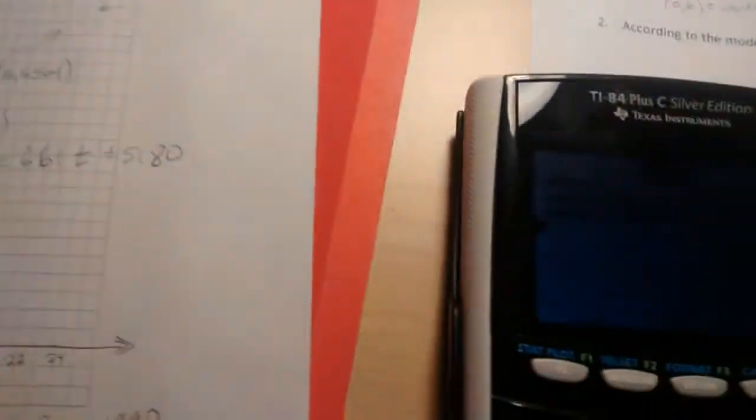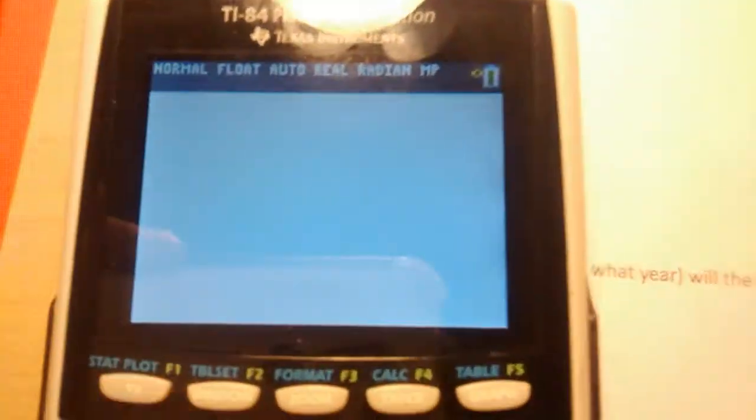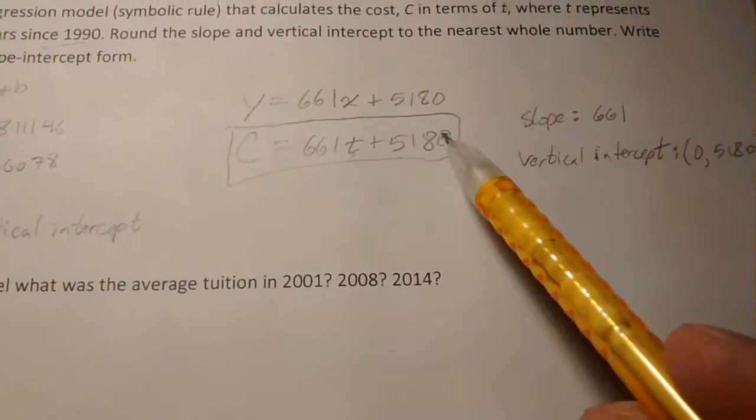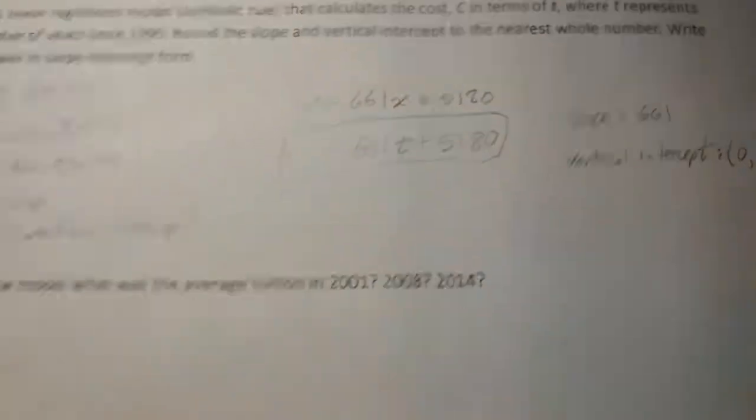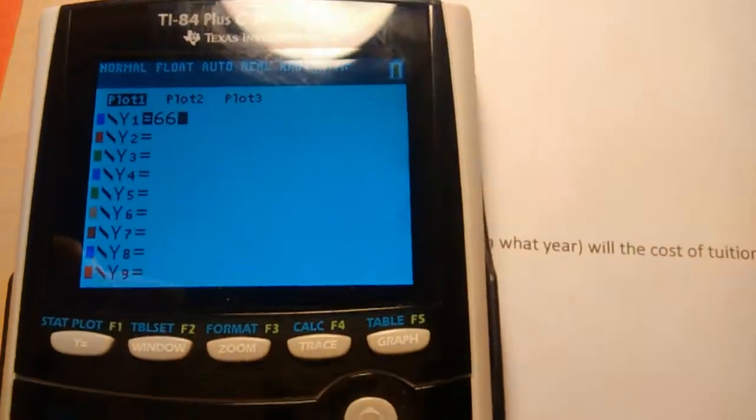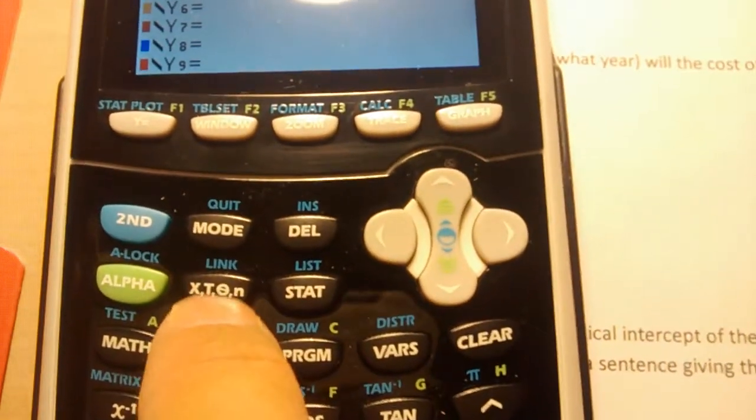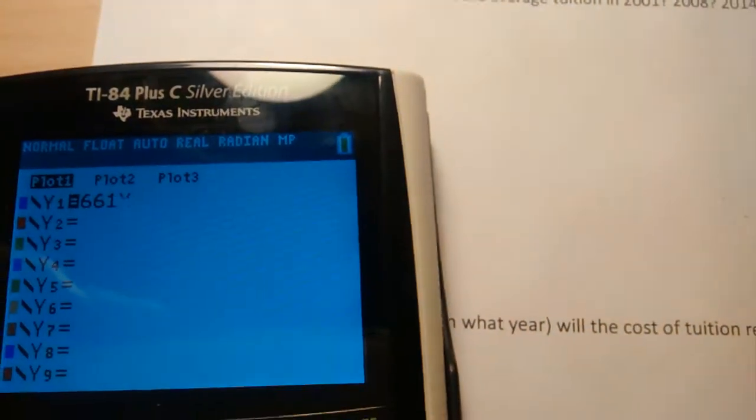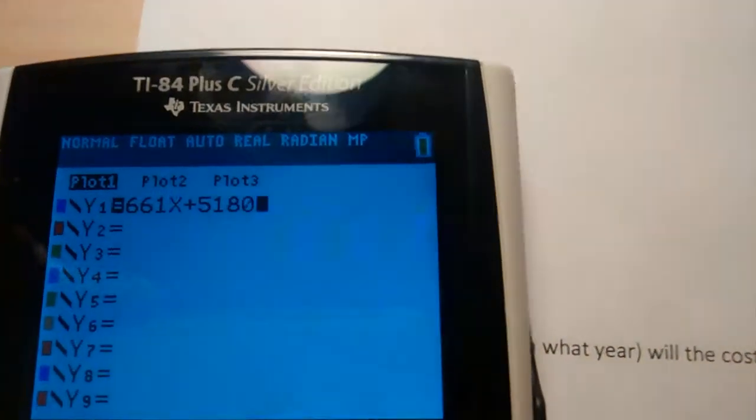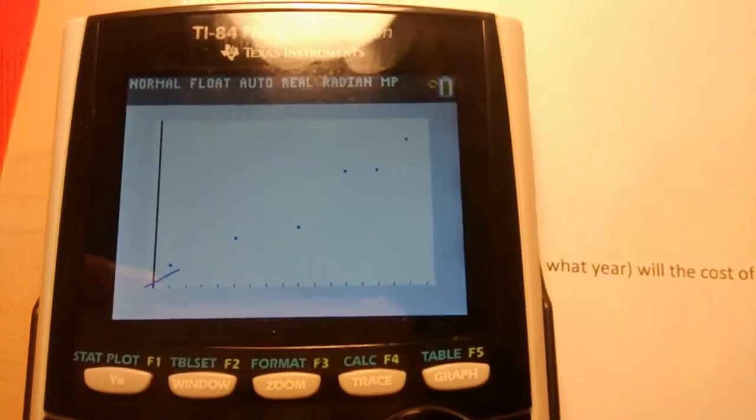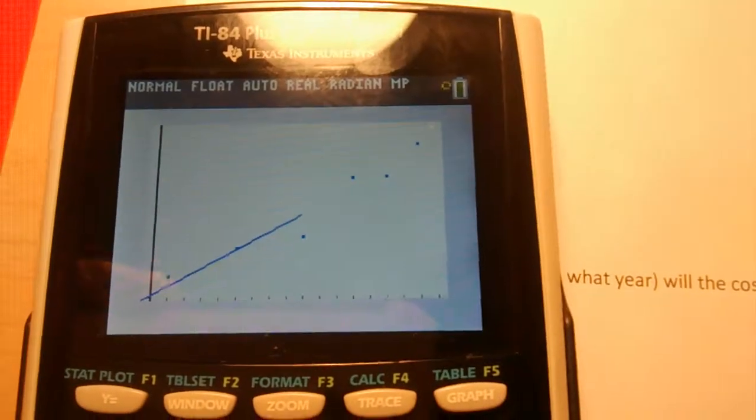All right, let me show you something you can do. Hit Y equals. And what we're going to do is graph this line, or this equation, which is a line, against the raw data. So we're going to enter in 661. Unfortunately, we can't use anything other than X. This is the X input variable button. So hit that. Add it to 5180. And the window's already been set because we did a zoom and then a 9. If you just hit graph, you'll see the line of best fit pass through our data.